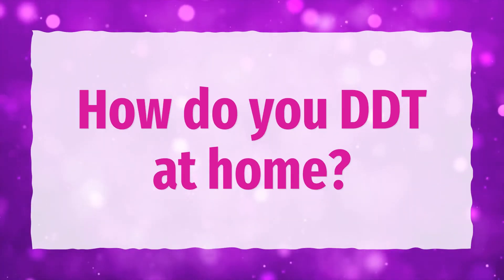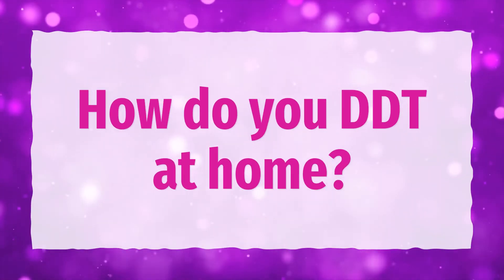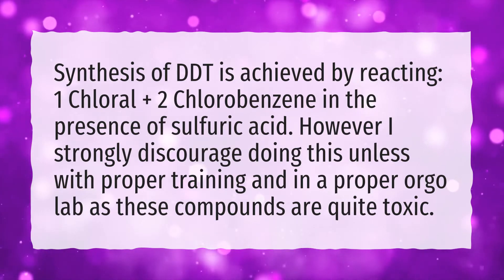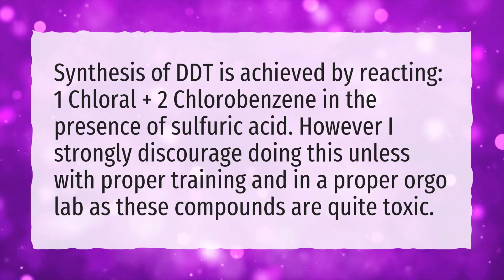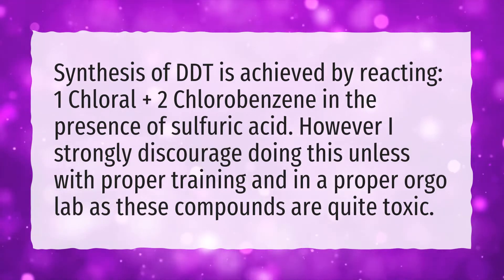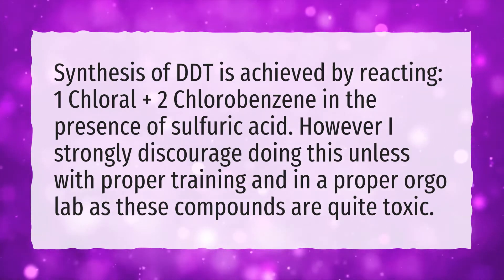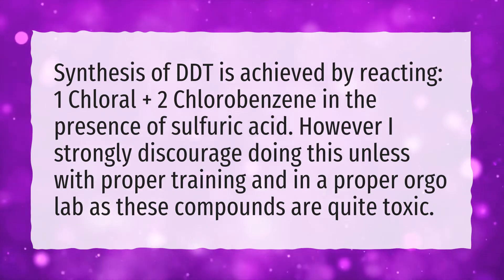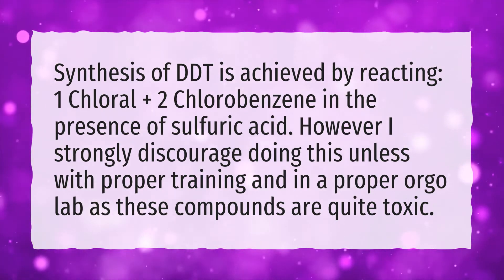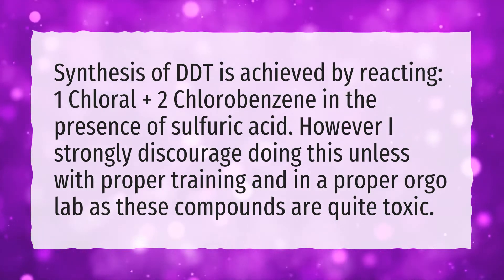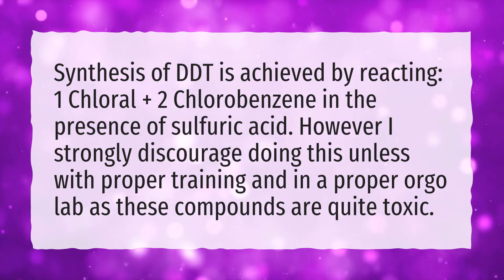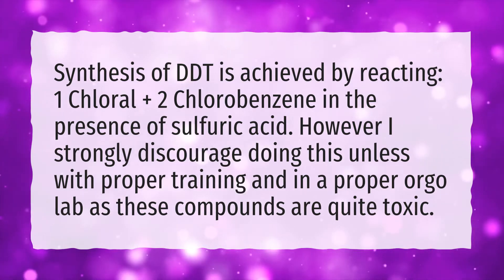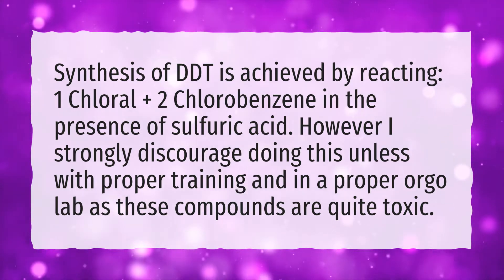How do you make DDT at home? Synthesis of DDT is achieved by reacting chloral plus chlorobenzene in the presence of sulfuric acid. However, I strongly discourage doing this unless with proper training and in a proper organic chemistry lab, as these compounds are quite toxic.